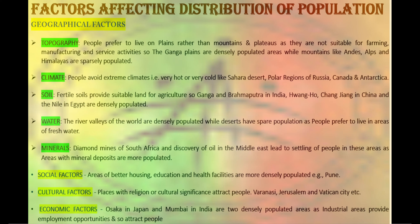Social factors also affect the distribution of human population. Areas with better housing, education and health facilities are more densely populated — for example, Pune in India. Similarly, places with religious or cultural significance attract people; Varanasi, Jerusalem and Vatican City are some of the best examples. Economic factors also matter: industrial areas provide employment opportunities, so large numbers of people are attracted to them. Osaka in Japan and Mumbai in India are examples of densely populated areas due to industrial factors.